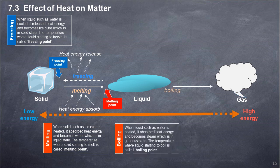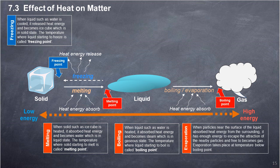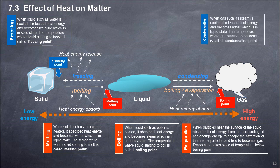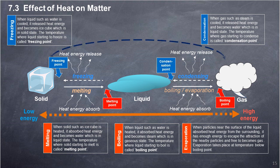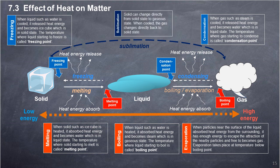Boiling: when liquid such as water is heated, it absorbs heat energy and becomes steam, which is in gaseous state. The temperature where a liquid starts to boil is called the boiling point. Evaporation: liquid can also turn into gaseous state without boiling. When particles near the surface of a liquid absorb heat energy from the surrounding, they have enough energy to escape the attraction of nearby particles and become gas. Evaporation takes place at temperatures below the boiling point. Condensation: when gas such as steam is cooled, it releases heat energy and becomes water (liquid state). The temperature where gas starts to condense is called the condensation point. Sublimation: a solid can change directly from solid state to gaseous state; when cooled, the gas changes directly back to solid state.